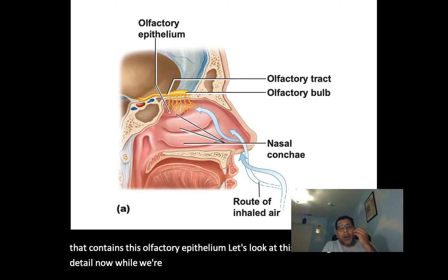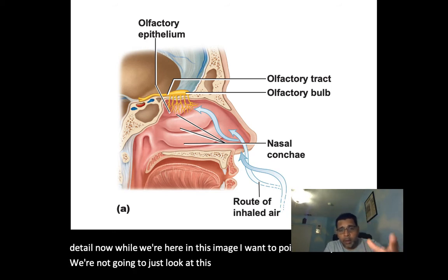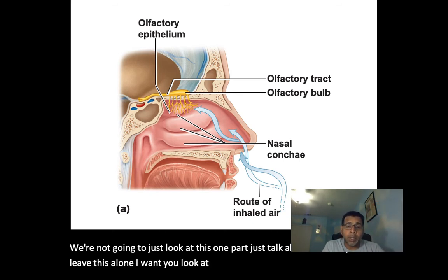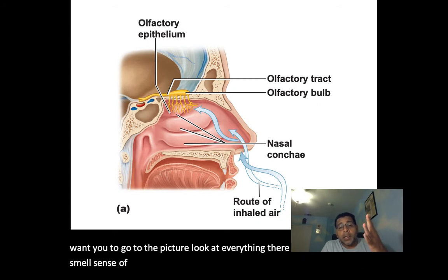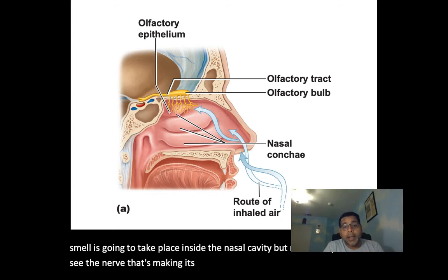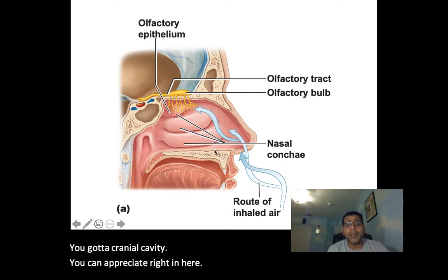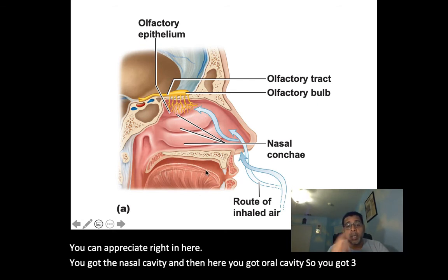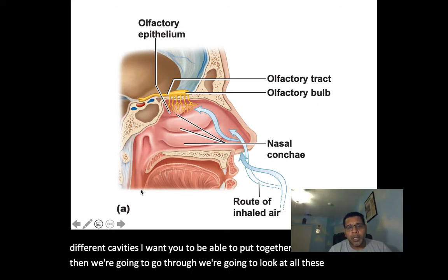Looking at this image, I want you to look at everything. The sense of smell takes place inside the nasal cavity, and the nerve making its way there is coming from the cranial cavity. You can appreciate the cranial cavity, the nasal cavity, and the oral cavity — three different cavities.